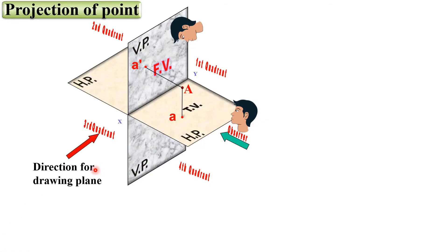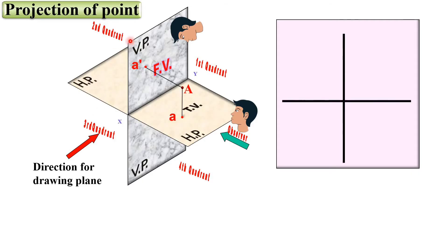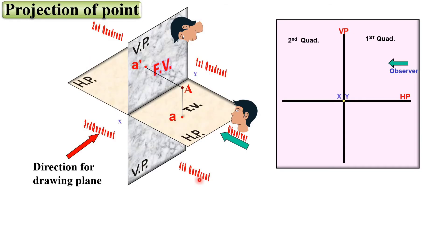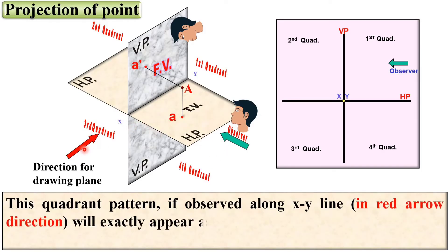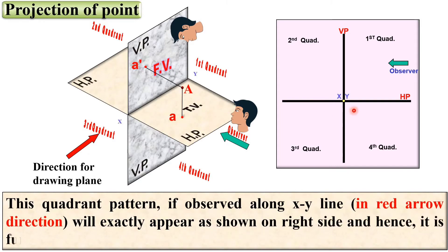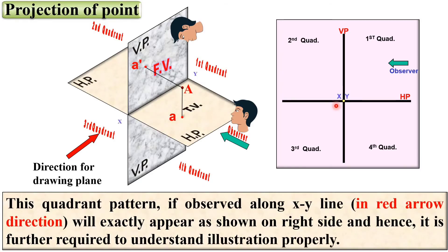Now the direction for the drawing plane — you have to look from this direction. This is actually the intersection of the two planes forming a cross. Here you can see X and Y should coincide over here; this is the VP and this is the line for the HP. If you consider the observer for the front view, this is the position of the observer. So you can say it is first quadrant, second quadrant, third quadrant, and fourth quadrant. This quadrant pattern is observed along the XY line and will exactly appear as shown on the right side, and hence it is further required to understand the illustration properly.